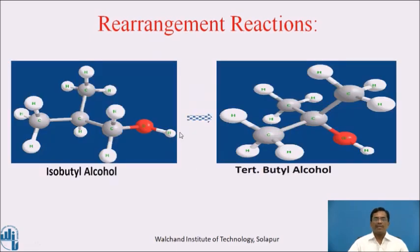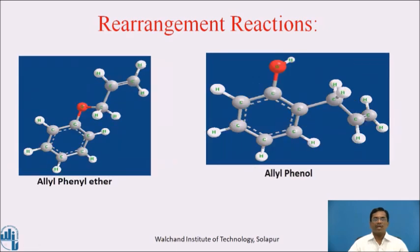This can be represented in a diagrammatic presentation: isobutyl alcohol gets converted into tertiary butyl alcohol in the presence of H+ ions (acid), and allyl phenyl ether when heated gives allyl phenol. This rearrangement of a molecule is known as a rearrangement type of reaction.